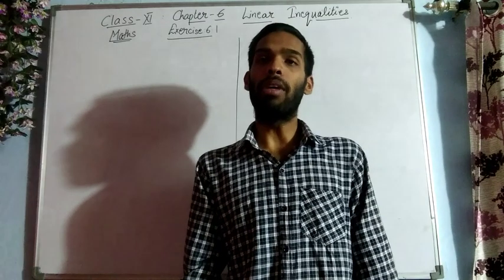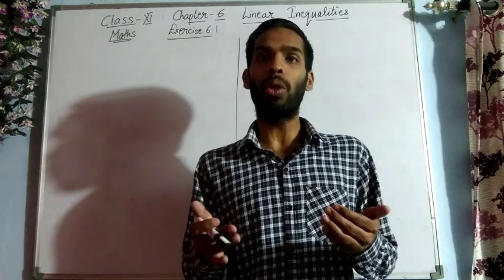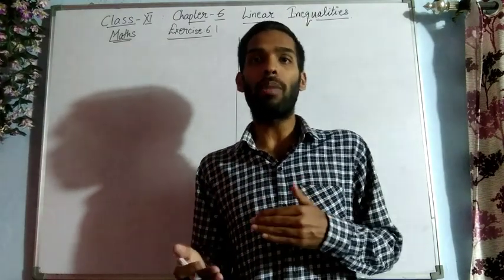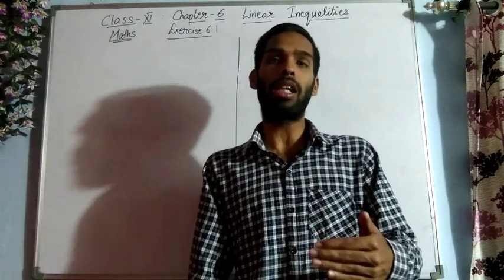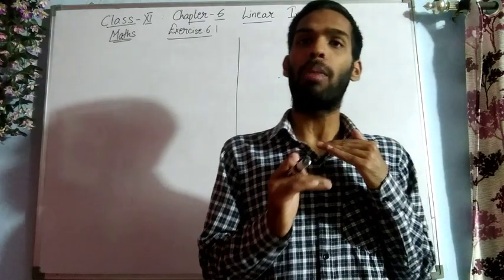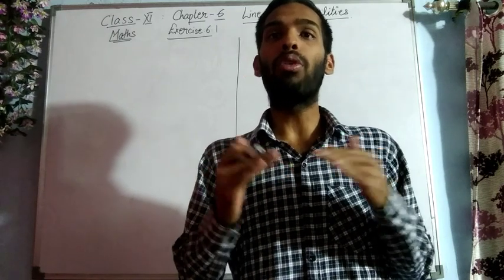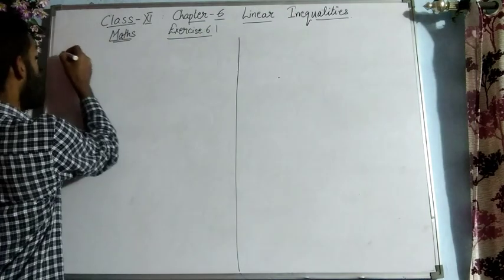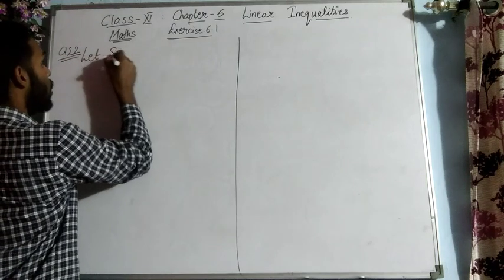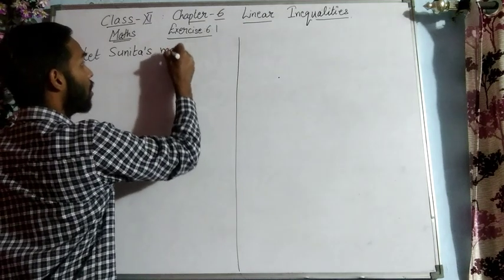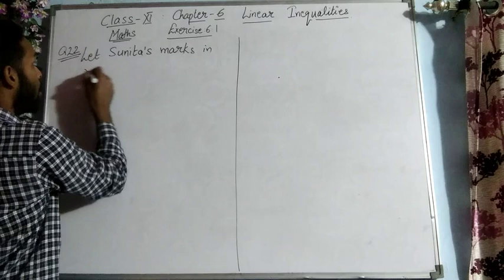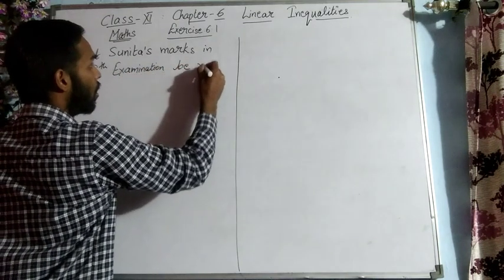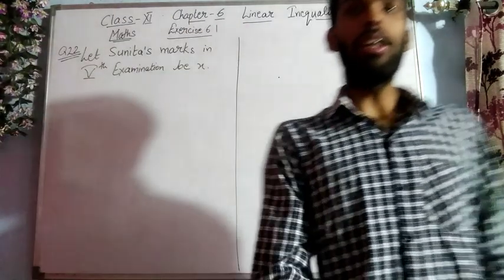If the student wants to receive Grade A, she must obtain an average of 90 marks or more. Four examination marks are already given and we need to find the fifth examination marks. Let the minimum marks Sunita scores in the fifth examination be x.